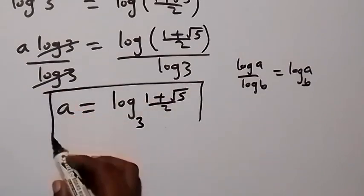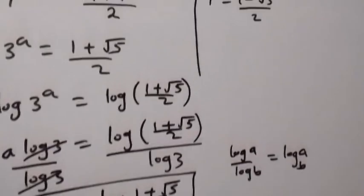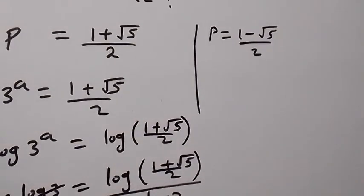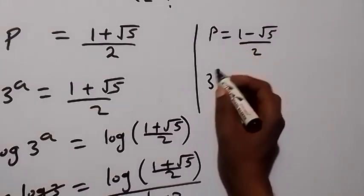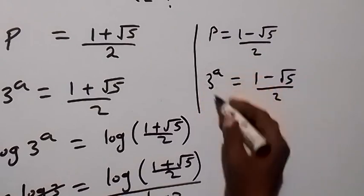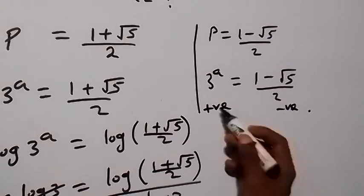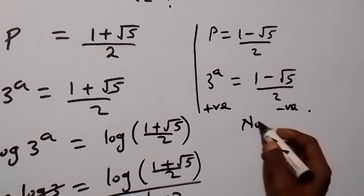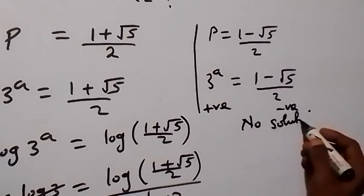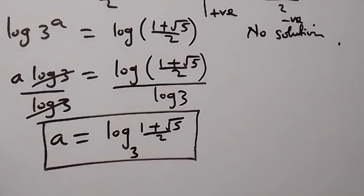By the change of base rule, this can be written as log base 3 of (1 plus root 5 over 2). So here we have the value of a for case 2. For case 3, p equals 1 minus root 5 over 2, which is a negative number, so 3 raised to power a cannot equal a negative number — there is no solution here. The only solution is a equals log base 3 of (1 plus root 5 over 2).